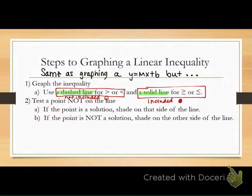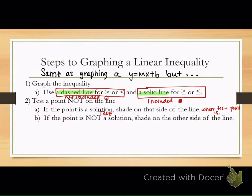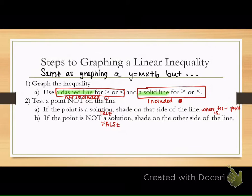If you have a dashed line and I ask if a certain point on that line is a solution, it's not. If it's a solid line, that point would be part of the solution set. Then we do a test point not on the line — choose a point on either side. If the point is a solution and makes a true statement, shade on the side where your test point is. If it's false, shade on the other side.